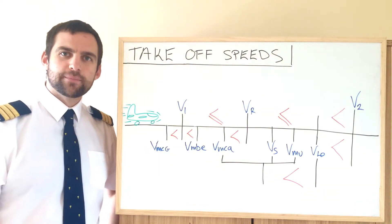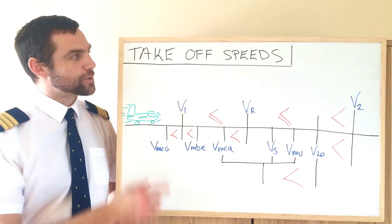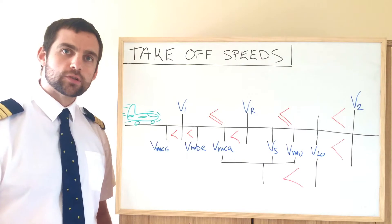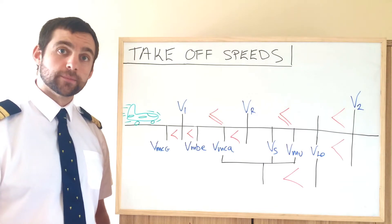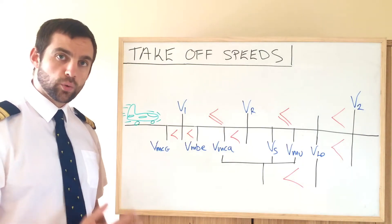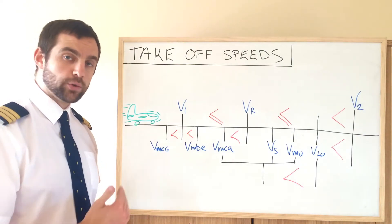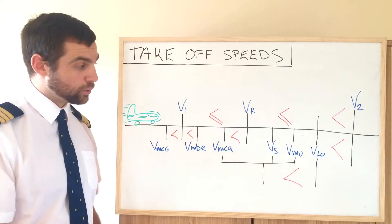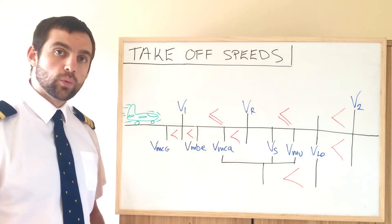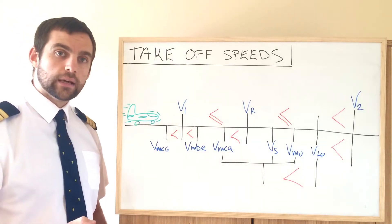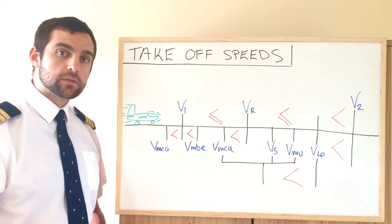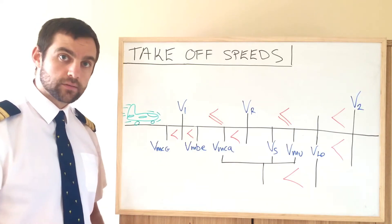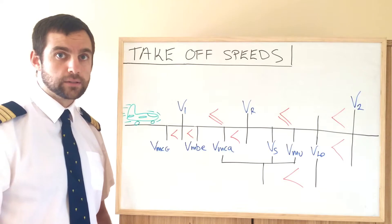Hello and welcome. Today on ATPL Theory we're going to be talking about takeoff speeds. It can be a little confusing — there's a lot of them. This diagram will show you all of them in order as they come up during the takeoff roll, and will also in red show you the requirements as in which have to be greater than others, greater than or equal in some cases.